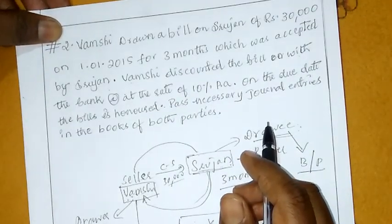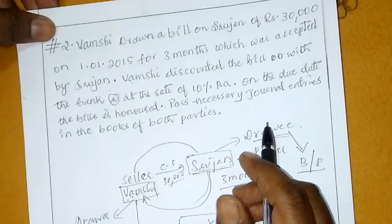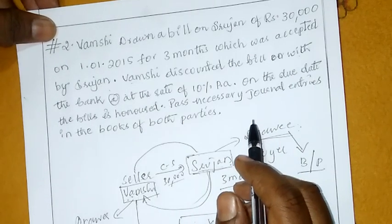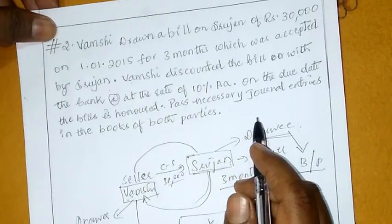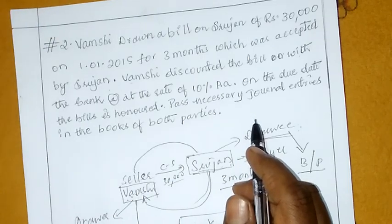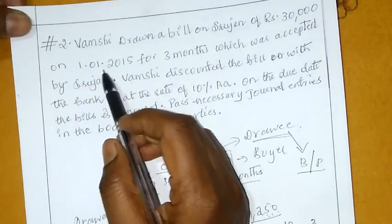Hi everyone. Here is the Bills of Exchange problem discussed. Second problem from the previous video — first problem was discussed already. One more problem.